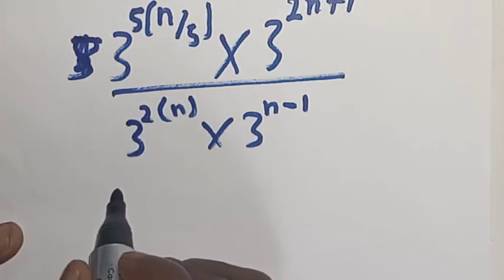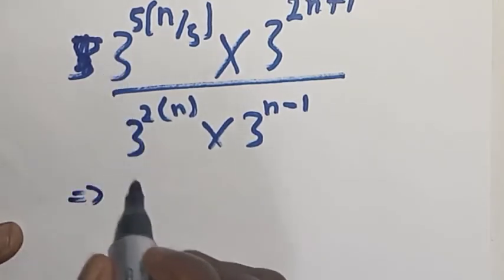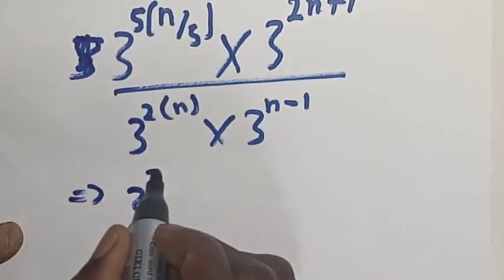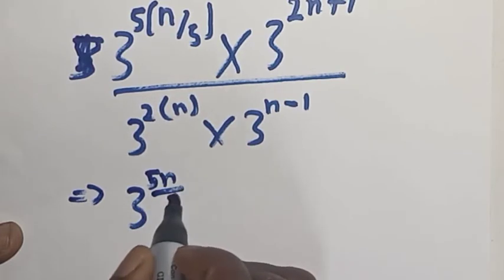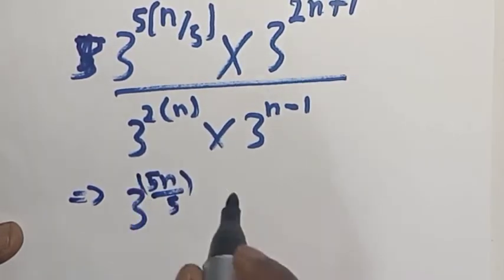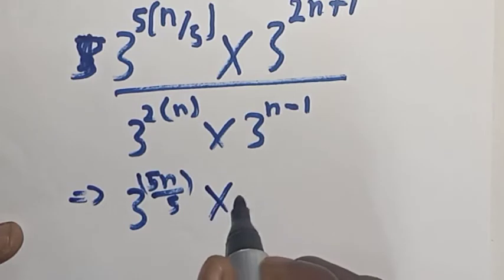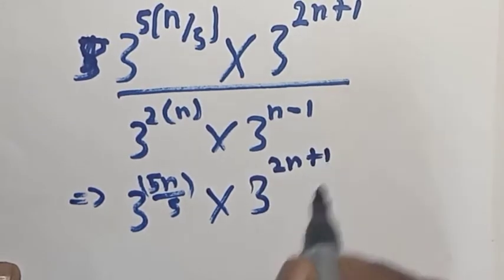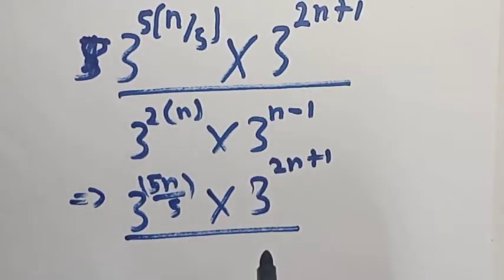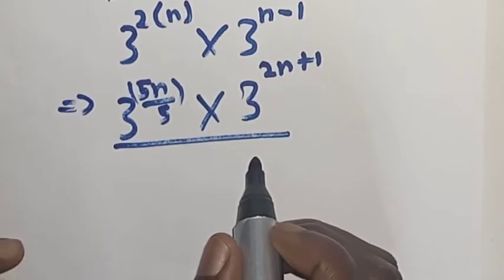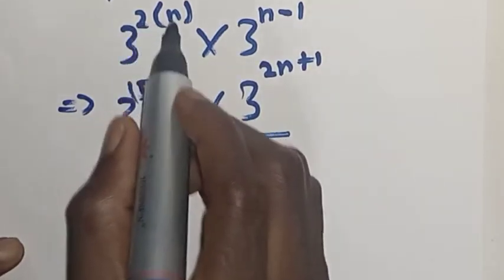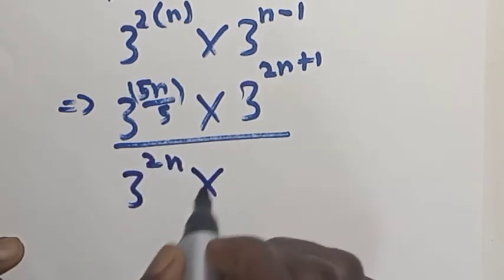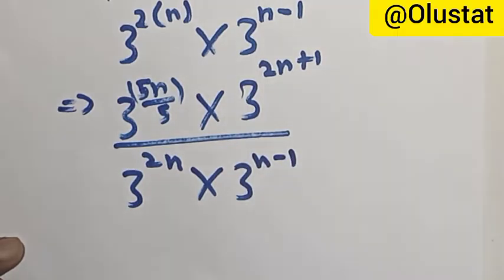This can be expressed as — let's open this bracket — 3 raised to power 2 times n, giving 3 raised to power 2n, multiplied by 3 raised to power 2n plus 1, over — let's open this bracket — 2 times n, that is 3 raised to power 2n, multiplied by 3 raised to power n minus 1.